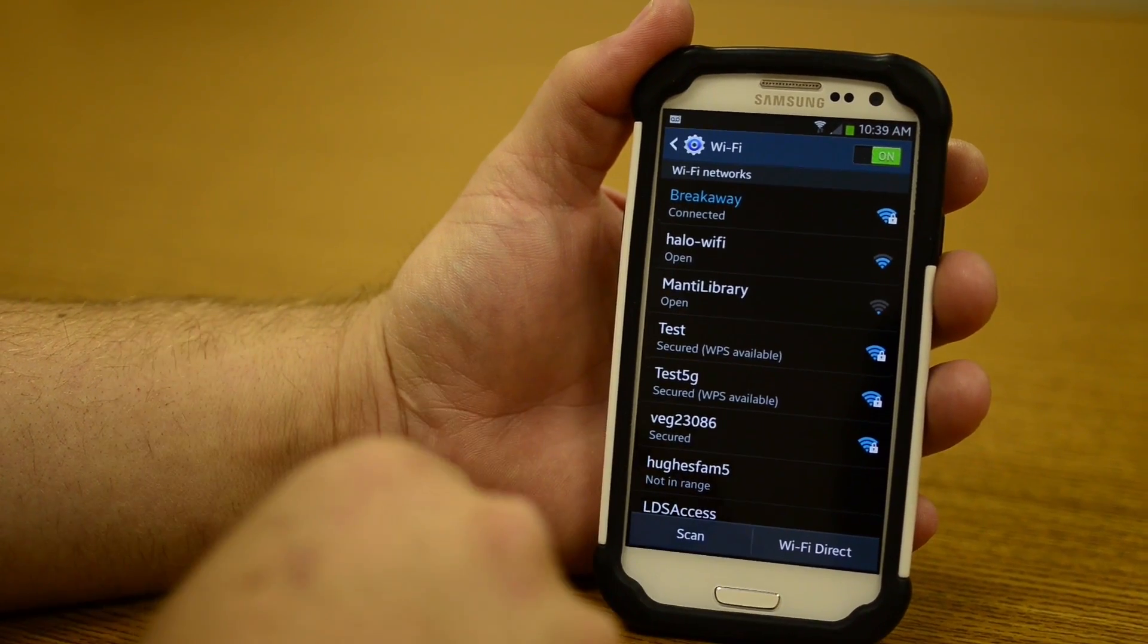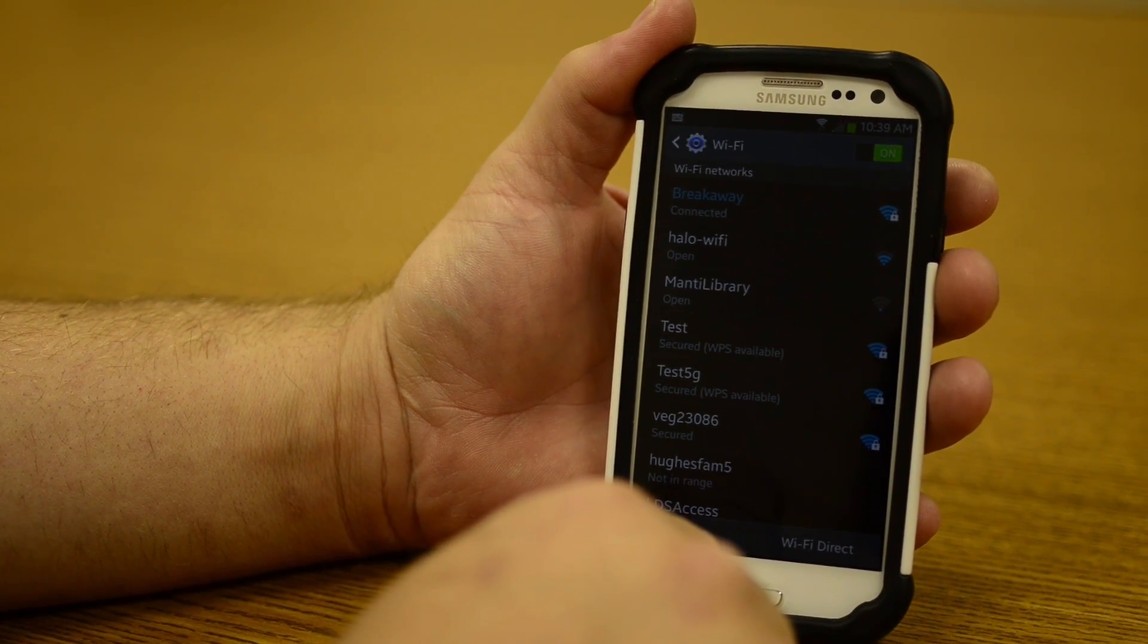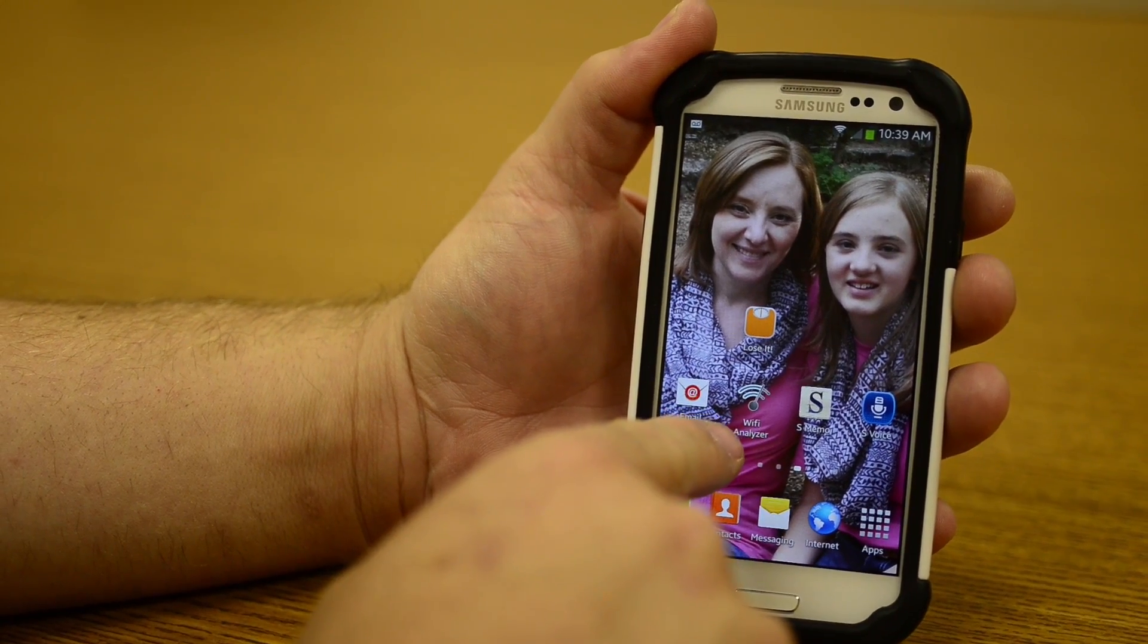One way that I found you can find out if you happen to be on the same channel as another router or device is a little program called Wi-Fi Analyzer.